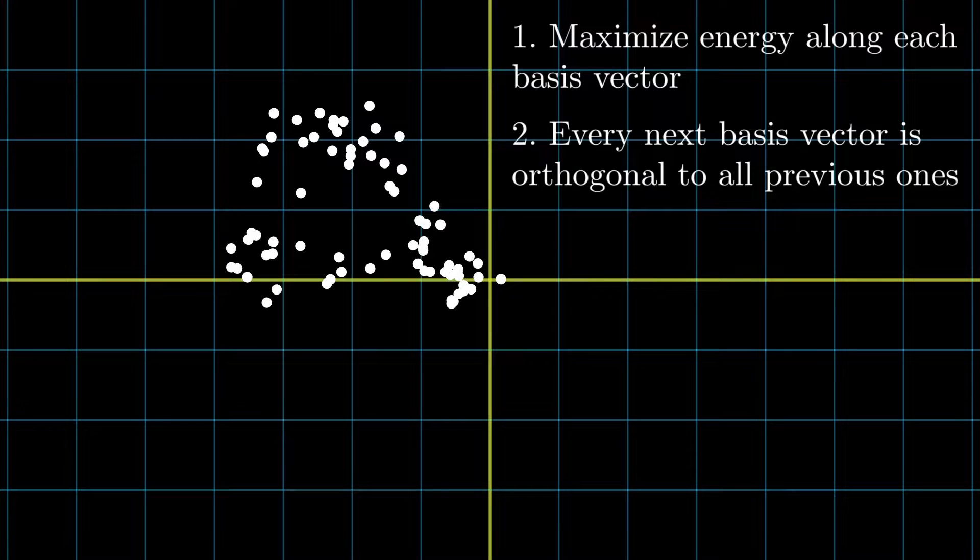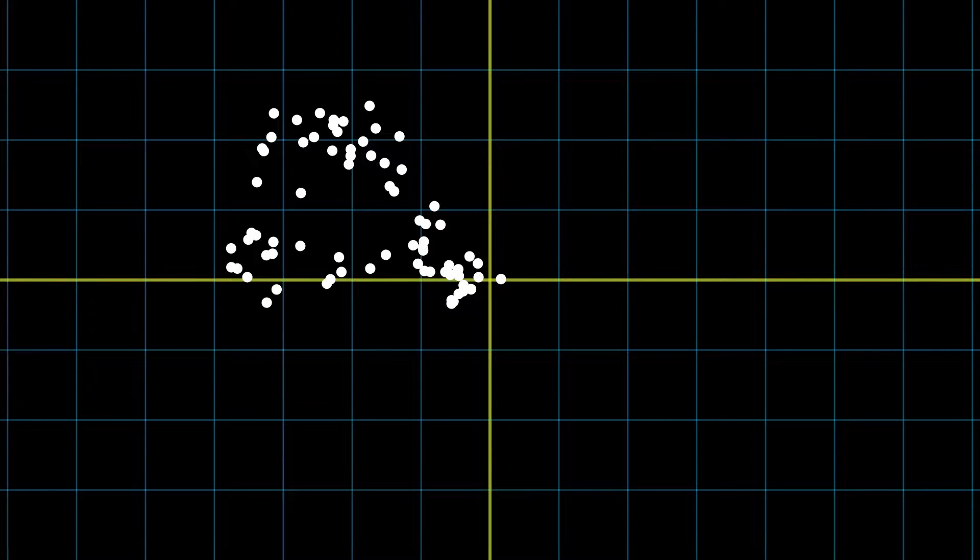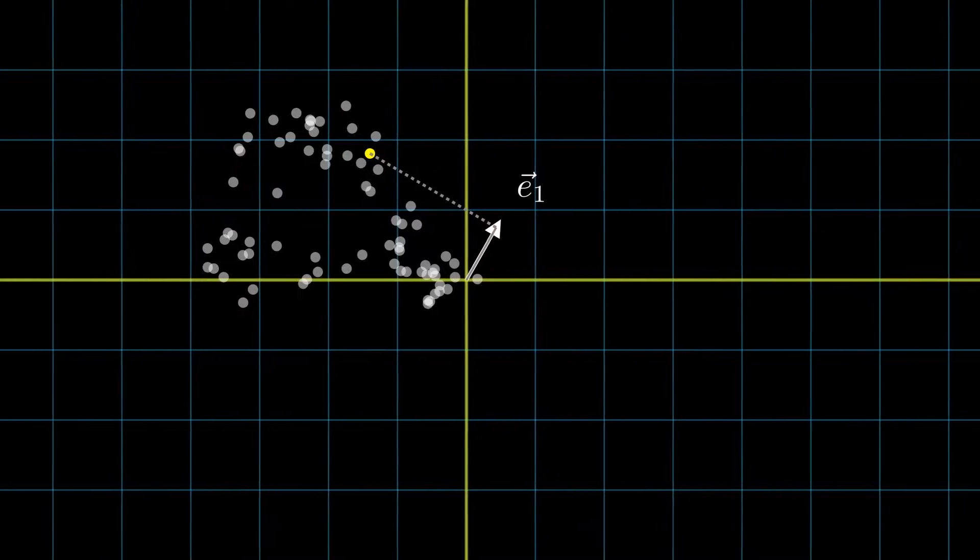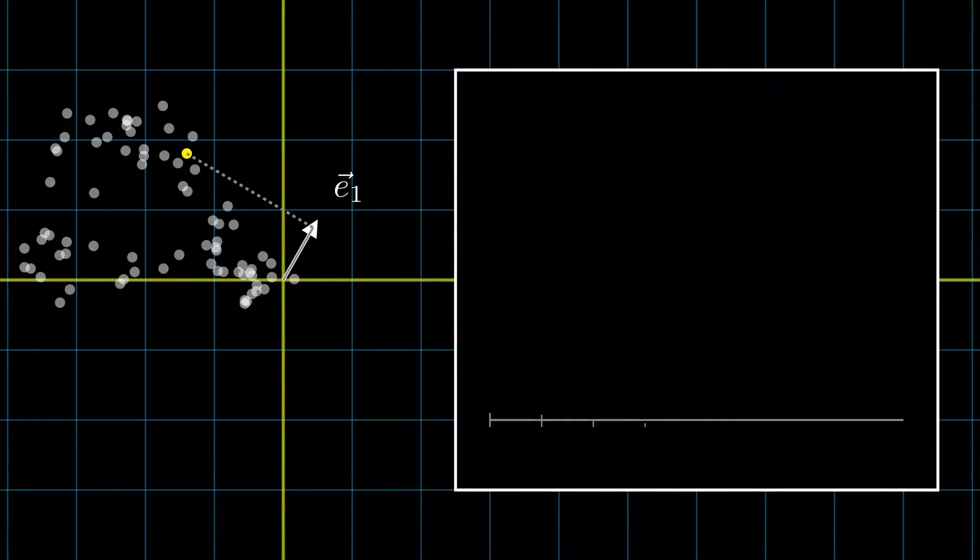So a little complicated so let's first define the first basis vector that we seek to find. The energy of a point along the basis vector will be defined as the length of the projection of the point onto the basis vector squared. We will then sum all of these squared lengths together for every data point that we have.